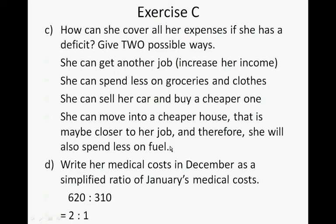She can move into a cheaper house that is maybe closer to her job, and therefore she will also spend less on fuel. Question D: write her medical cost in December as a simplified ratio of January's medical cost. So it's 620 to 310, which simplifies to 2 to 1.